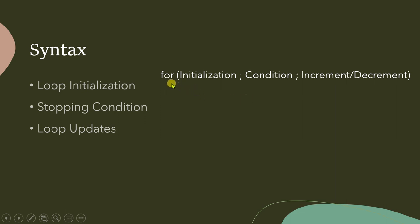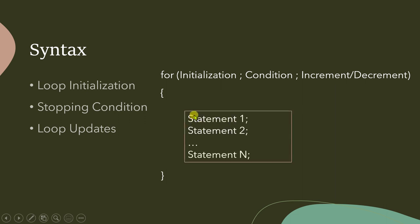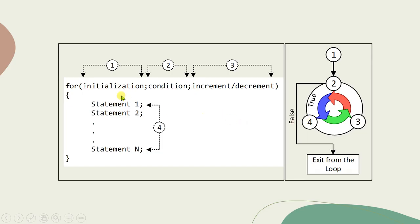If you want to execute some statements multiple times, you write them inside the body of the for loop. The body is represented with opening and closing curly braces, and the statements you want to execute repeatedly go inside. This is the simple syntax of a for loop.